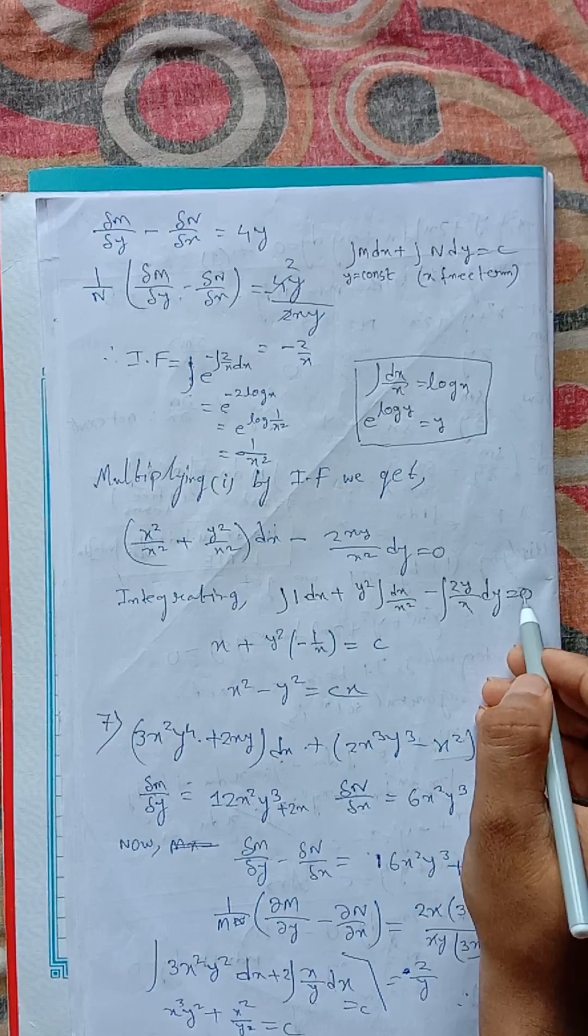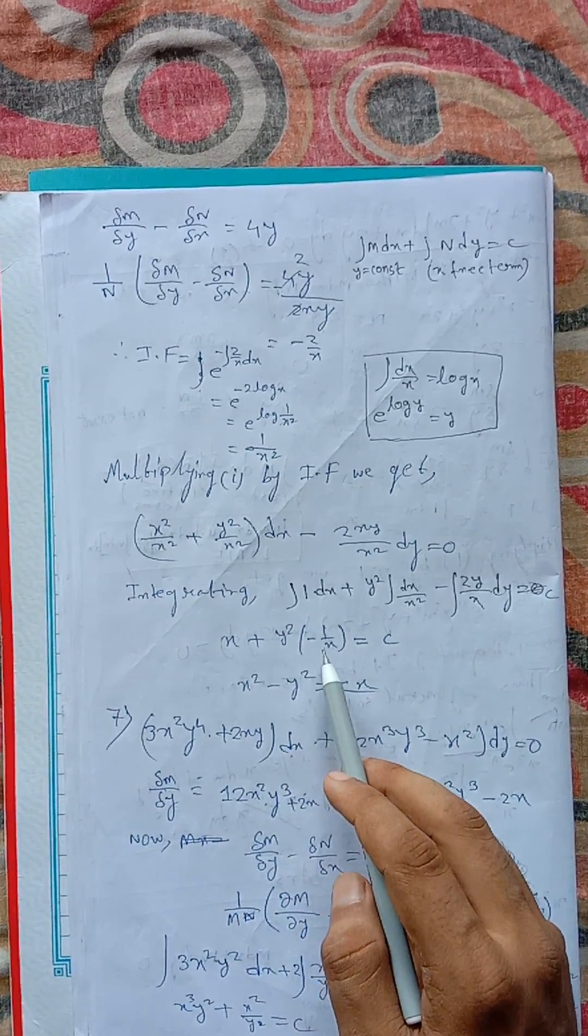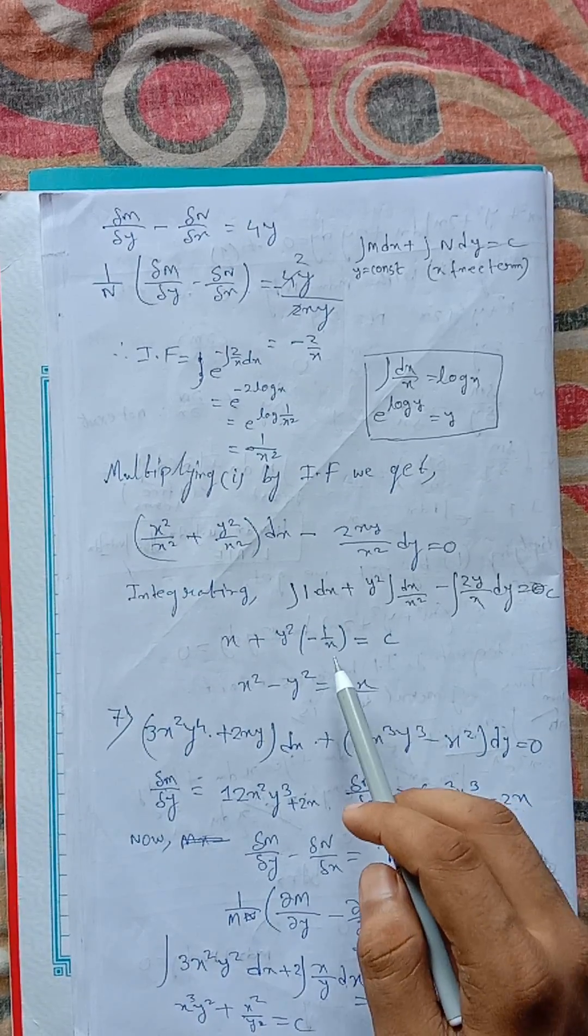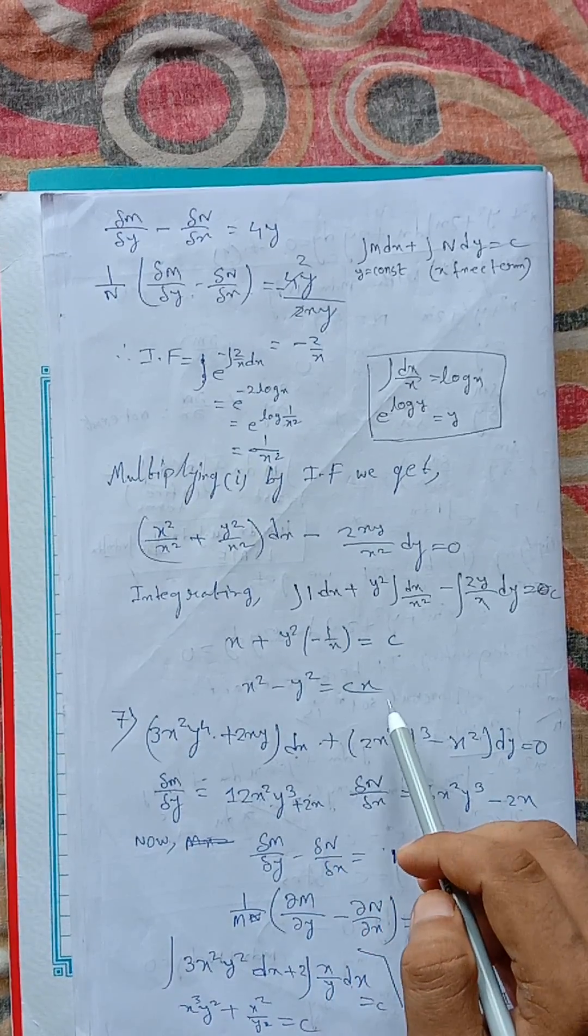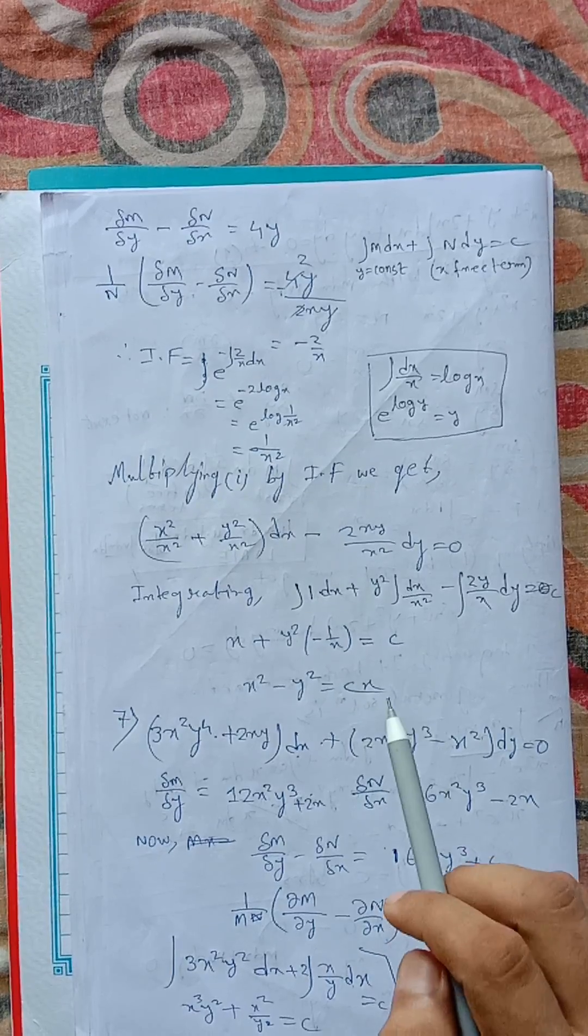This is x plus y square into minus 1 by x equals c. Then x square minus y square equals cx. This is the required answer for this question.